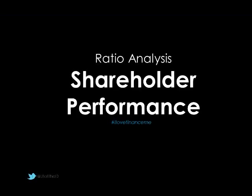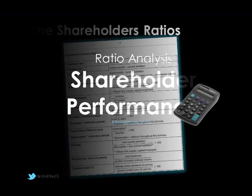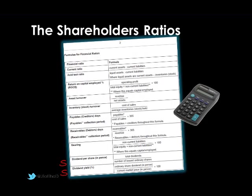This video tutorial will look at the ratio analysis techniques for shareholder performance. On page 2 of the BOD3 paper, you'll find the formulas, and the two we're interested in are the last two: dividend per share, expressed in pence, and the dividend yield, which is always expressed as a percentage.